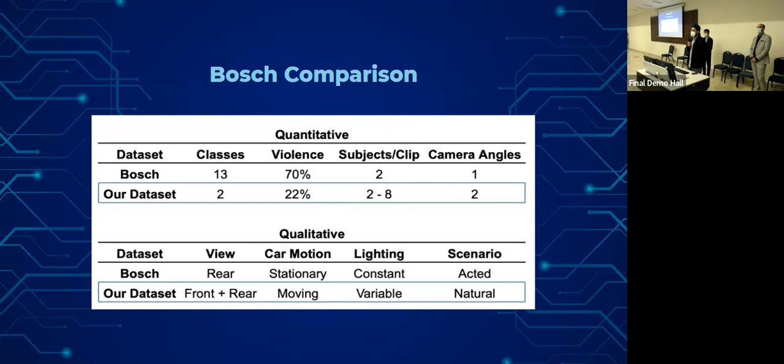Lastly, I'd like to stress on the fact that we're using two different camera angles, both of which cover the front and the rear seats, whereas the Bosch dataset, as you can see, only covers the rear seat. And our car is also moving, so we have variable lighting sources that we use in training our model.